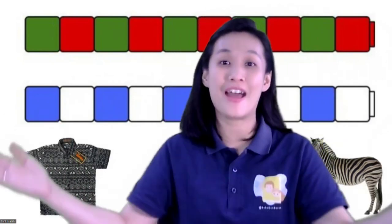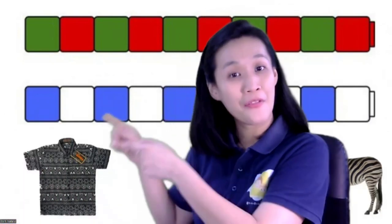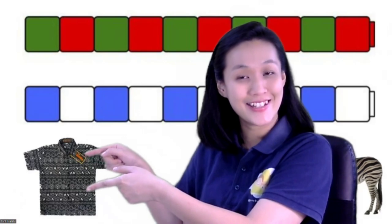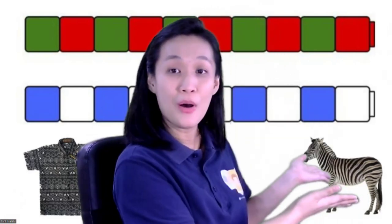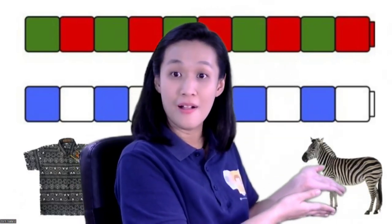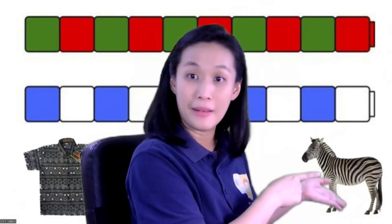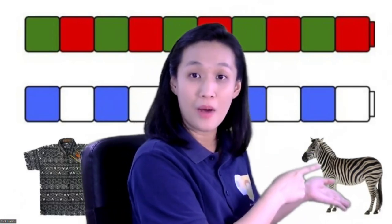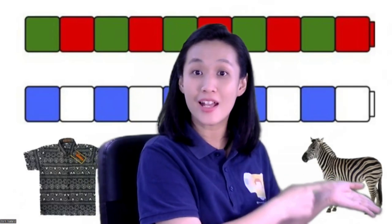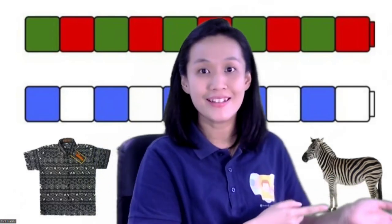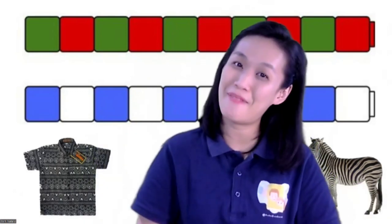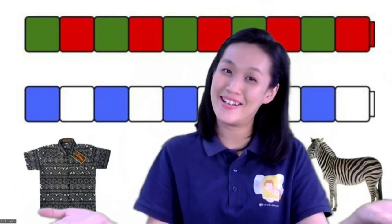Patterns are everywhere. You can see patterns on clothes, like this. You can see patterns on animals, like this zebra. The pattern is black, white, black, white, black, white. Yes! That's the pattern.